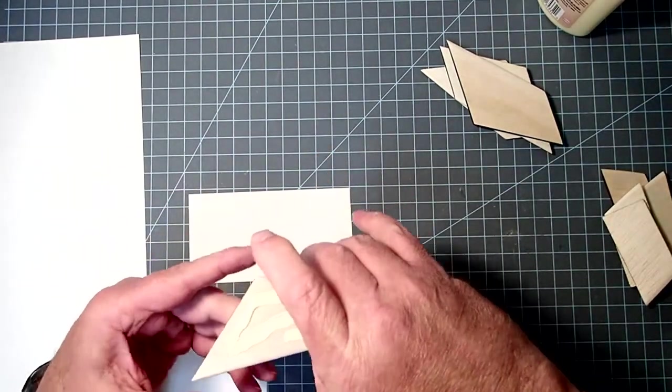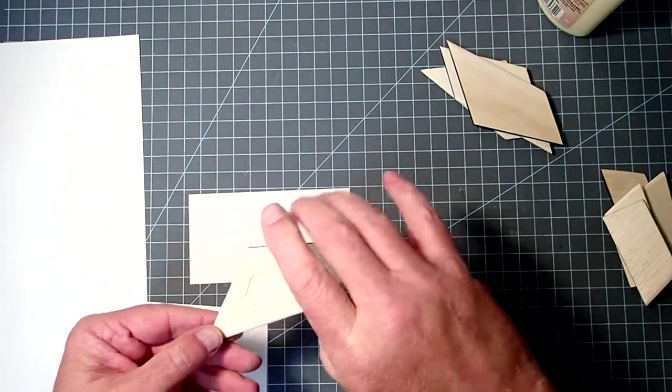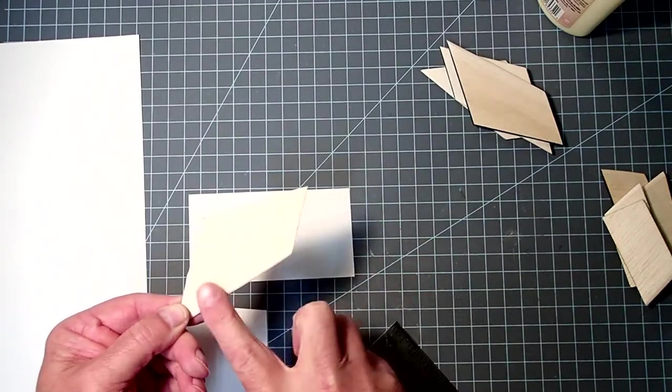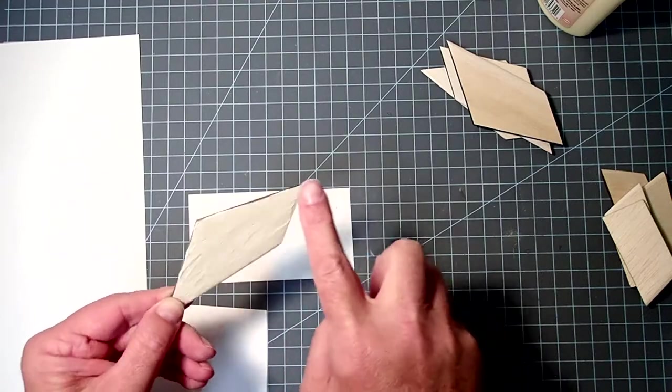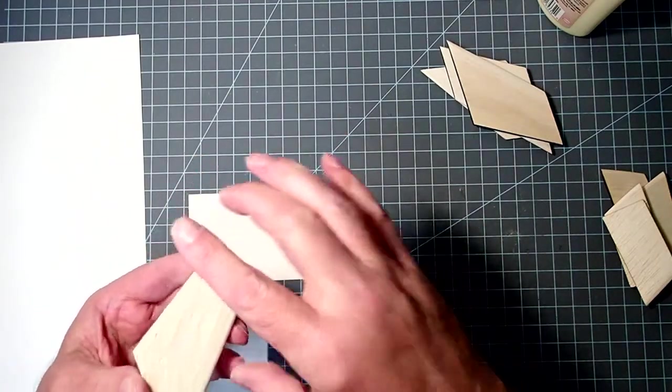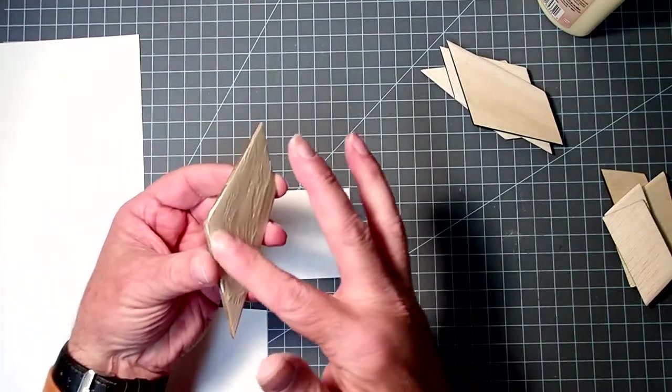And you have to do this fairly quickly. And I recommend if you've never done this before, try it on a piece of scrap balsa a few times before you actually try to do it on a fin. So I'm just going to completely cover my surface here.